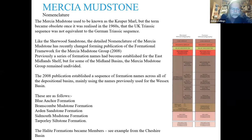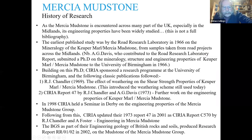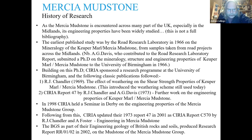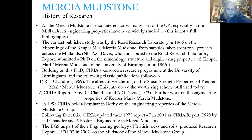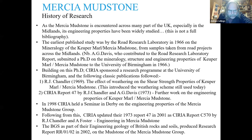The history of research is briefly covered here. Because the Mercia Mudstone is widely encountered across the UK, especially in the Midlands, its engineering properties have been widely studied. The earliest published study was by the Road Research Laboratory in 1966 on mineralogy and samples from road projects by A.G. Davis, who subsequently did a PhD on this. Building on this PhD, CIRIA followed up with a research programme at Birmingham University, resulting in the classic publications: China 1969 and the 1973 CIRIA report. In 1998 CIRIA held a seminar in Derby on the engineering properties of the Mercia Mudstone Group, and updated the 1973 report in 2001 as CIRIA report 570 by Charlotte Foster.